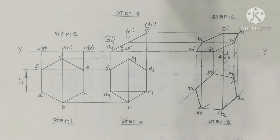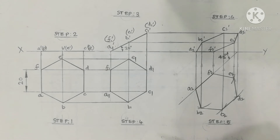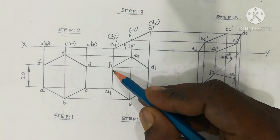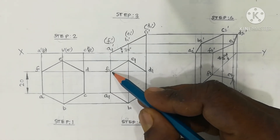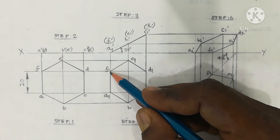This is a question on the projection of planes involving the surface of the lamina. It is a hexagonal plate of side 20mm. It rests on one of its sides — we consider AF as the resting side — resting on the HP.